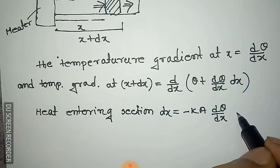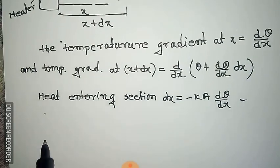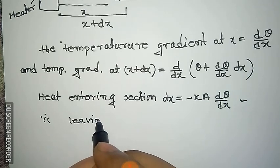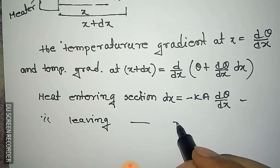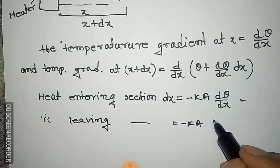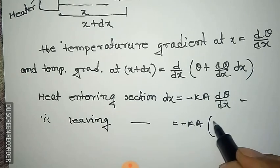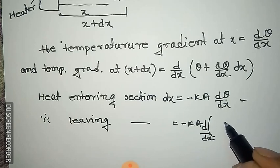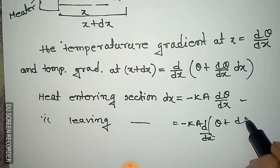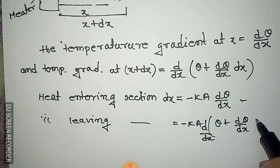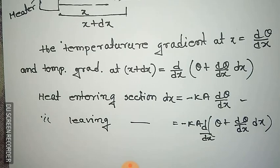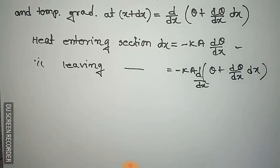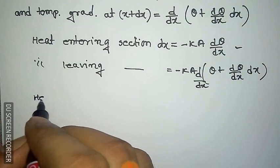The heat entering the section dx is Q1 = A times minus k times (d theta / dx). The heat leaving or outgoing from section dx is Q2 = -k A times d/dx of (theta + (d theta / dx) dx).